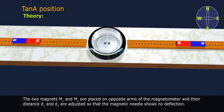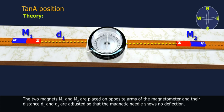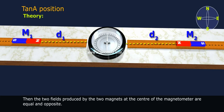The two magnets M1 and M2 are placed on opposite arms of the magnetometer and the distances D1 and D2 are adjusted so that the magnetic needle shows no deflection. Then the two fields produced by the two magnets at the center of the magnetometer are equal and opposite.